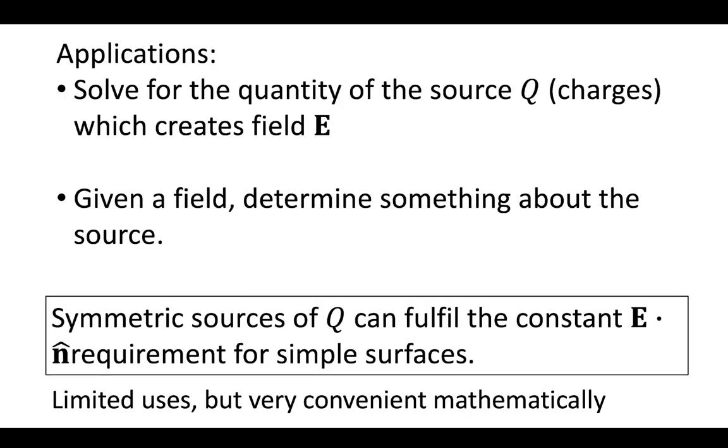We use that to solve for the quantity of the source, and the source is Q, or charges, which created that field E, which was constant everywhere, normal to that Gaussian surface. Only symmetric sources of Q, those charges, could fulfill that constant E dot normal requirement.